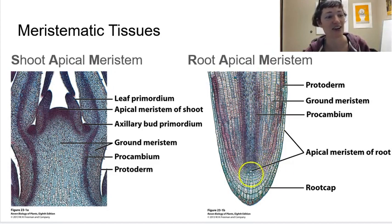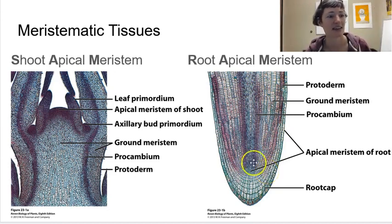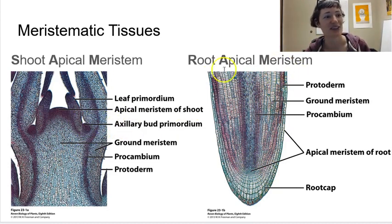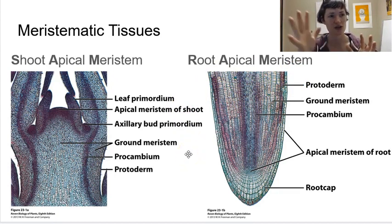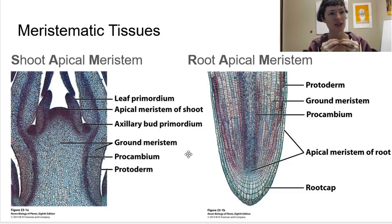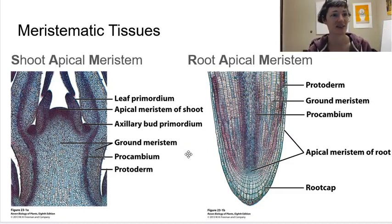Down here all those cells are about the same size, just spreading out to different locations. As we travel up the root and out in the shoot, we start to see them specialize — they start to look different, they're in a different location, they have a different job. As we look at meristematic tissues, we'll track their pathways: where they came from, what their apical meristem was, then what their primary meristem was, and eventually we'll have secondary meristems to look at.